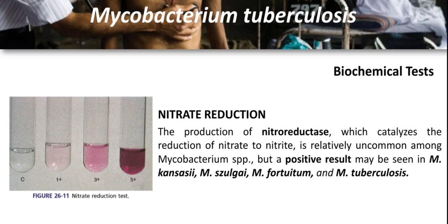The nitrate reduction test is valuable for identifying Mycobacterium tuberculosis, M. kansasii, M. szulgai, and M. fortuitum. The ability of acid-fast bacilli to reduce nitrate is influenced by the age of colonies, temperature, pH, and enzyme inhibitors. Rapid growers can be tested within two weeks; slow growers should be tested after three to four weeks of luxuriant growth. Positive results are seen in M. kansasii, M. szulgai, M. fortuitum, and M. tuberculosis. Reactions range from light pink (1+) to pink (3+) to dark pink (5+); the control tube remains clear.